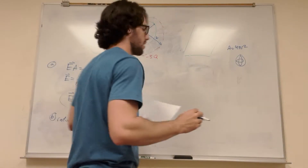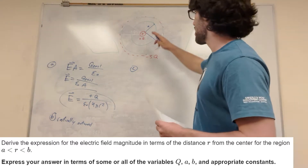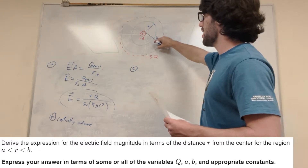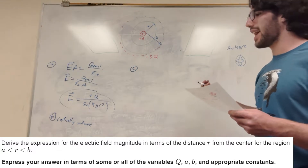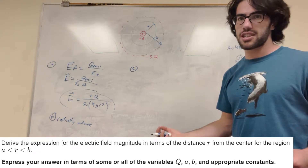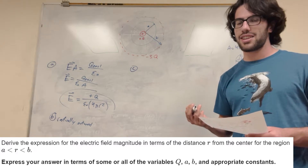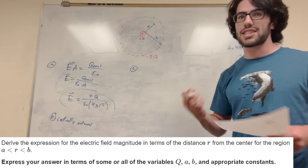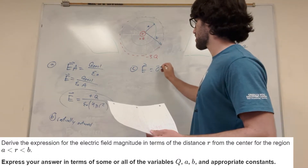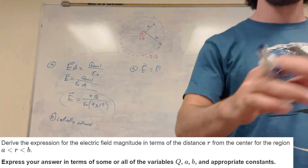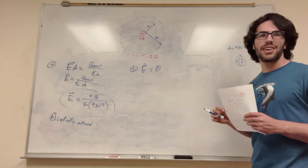Part C: now we're in the region between A and B — inside the metal part of the sphere. If we're inside a conducting shell, there can't be an electric field inside it. So E is simply equal to zero inside the conducting shell. You just have to use your reasoning on that one.